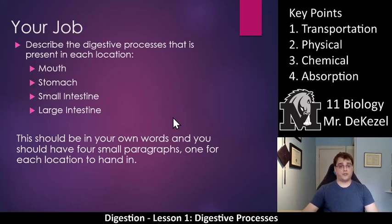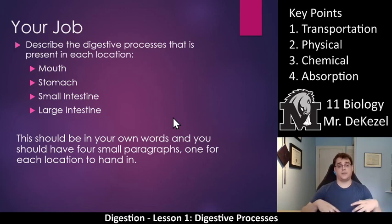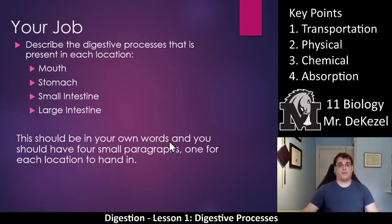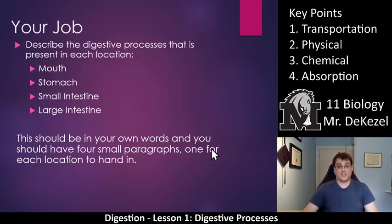For your assignment, I'd like you to describe the digestive processes that happen in the mouth, in the stomach, in the small intestine, and in the large intestine. We talked about a couple of different processes at each location, so I want you to separate and break those up. This should be in your own words and should have four small paragraphs, one for each location. Thanks very much for watching everyone, and if you have questions, please let me know.